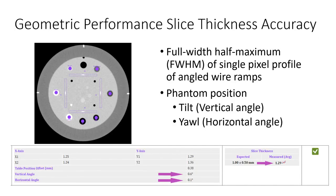Slice thickness accuracy is evaluated as a full width half maximum of a single pixel profile of each wire ramp, corrected by the tangent of the ramp angle. The profile is constructed based on the maximum pixel value found over the length of the ramp, sampling across a limited distance perpendicular to the ramp.